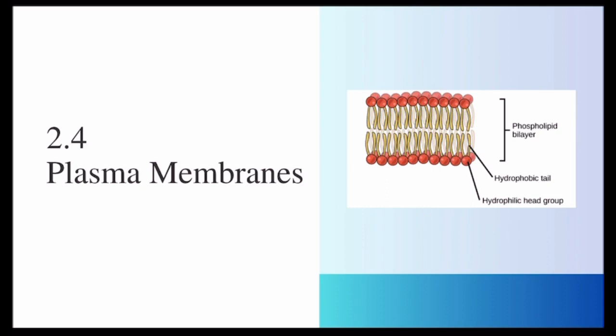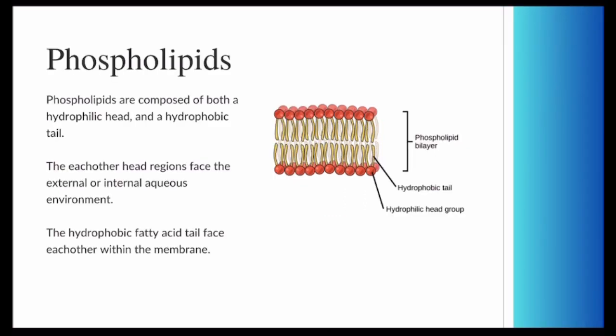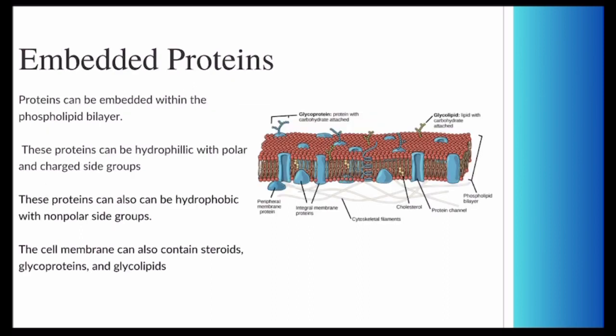Next, we're going to be going over plasma membrane. As I explained in the last unit, phospholipids, which are these individual molecules here, have a hydrophilic head and a hydrophobic tail. This means that the head interacts with water while the tail does not. Therefore, the heads face the external and internal environment, which holds water, while the hydrophobic tails face each other, as they do not interact with water.